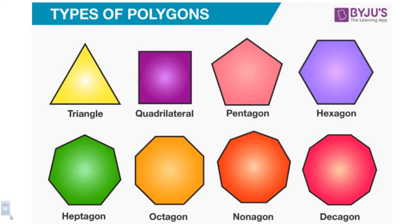These polygons all happen to have equal side lengths and equal angles, so they're called regular polygons. But polygons certainly do not have to be regular. We're going to be focusing on the first two — triangles and quadrilaterals — but I just wanted you to be aware of all the different types of polygons that there are.